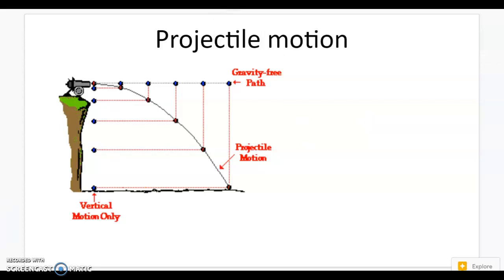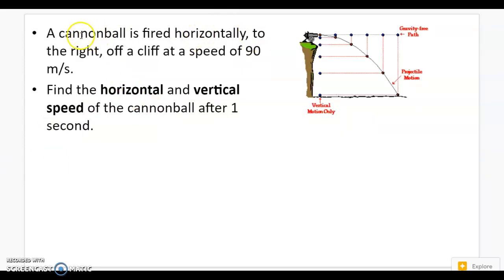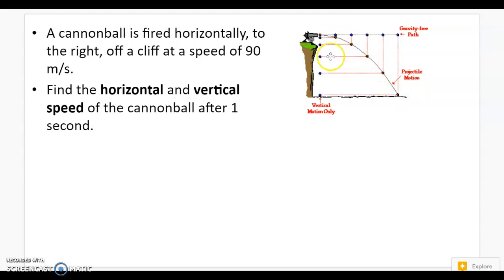Solving out the problems. A cannonball is fired horizontally to the right off a cliff at a speed of 90 meters per second. Find the horizontal and vertical speed of the cannonball after one second. When we solve this problem, because it follows a parabolic path — coming down at an angle — after one second we'll figure out exactly where the ball is. To figure out the horizontal and vertical speeds, it's really hard to describe something coming at an angle.